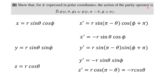For psi expressed in polar coordinates, the action of the parity operator is: when the parity operator acts on psi, which is a function of R, theta, phi, it gives psi evaluated at R, pi minus theta, phi plus pi. Now we will verify whether this is indeed the parity operation, that is, whether it changes the sign of all coordinates.